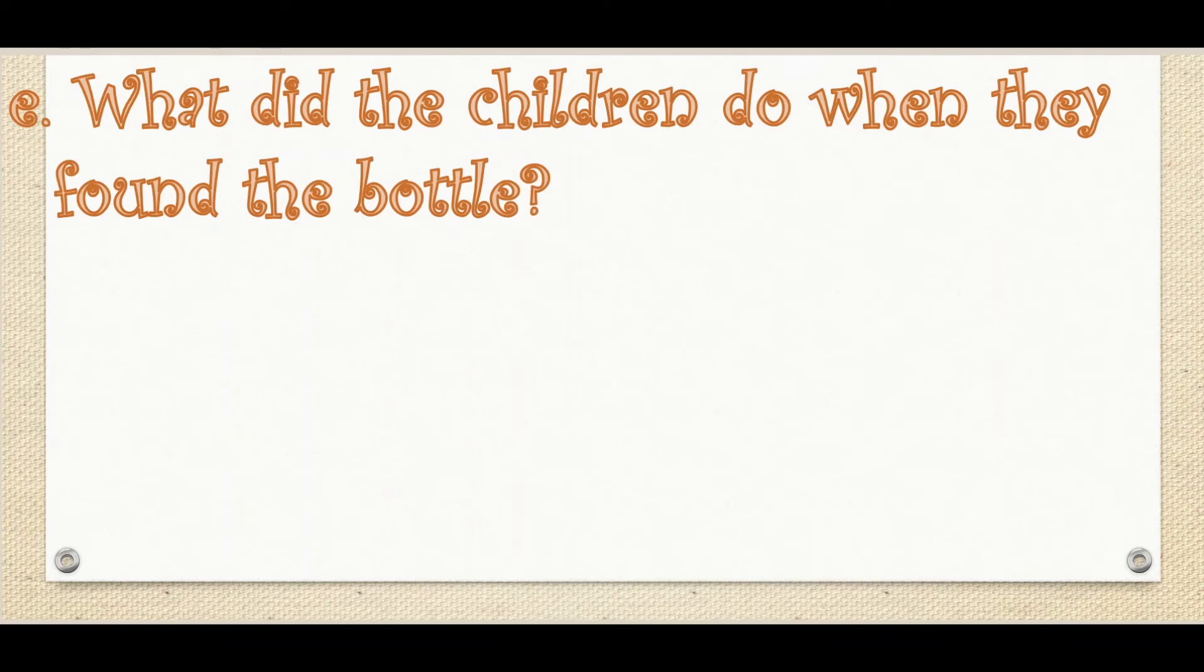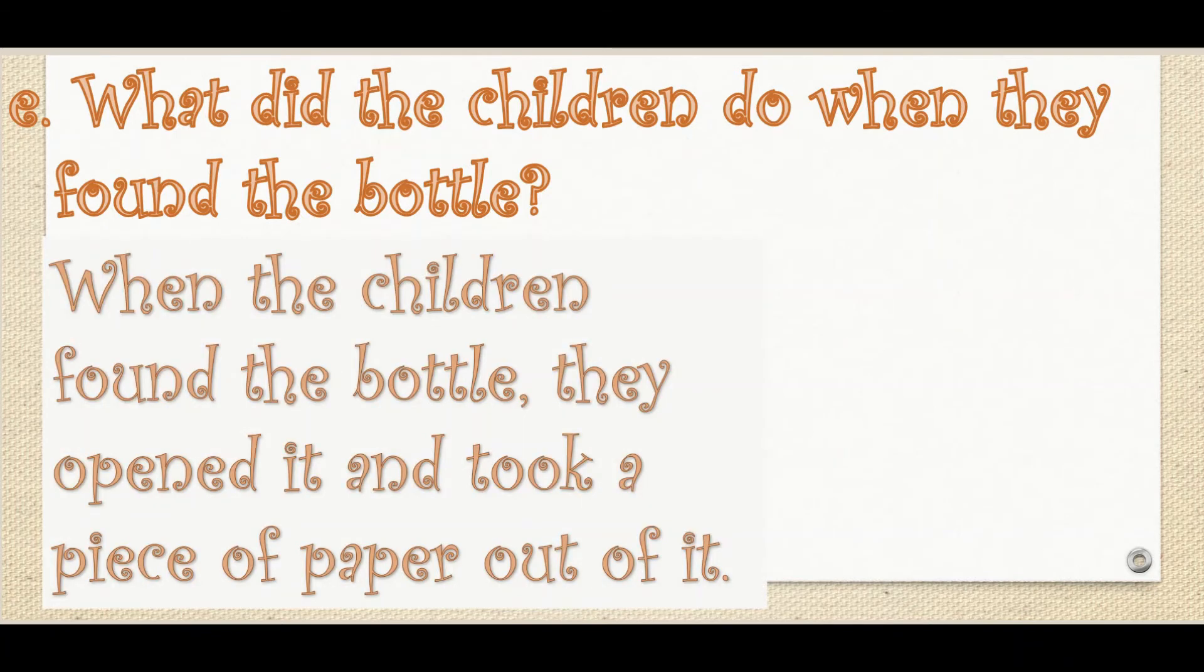Next question: What did the children do when they found the bottle? Okay, we just discussed that they found a green bottle and in that bottle there was a paper with some writing on it, right? So what did they do? They were not able to read anything. Well, when the children found the bottle, they opened it and took a piece of paper out of it.